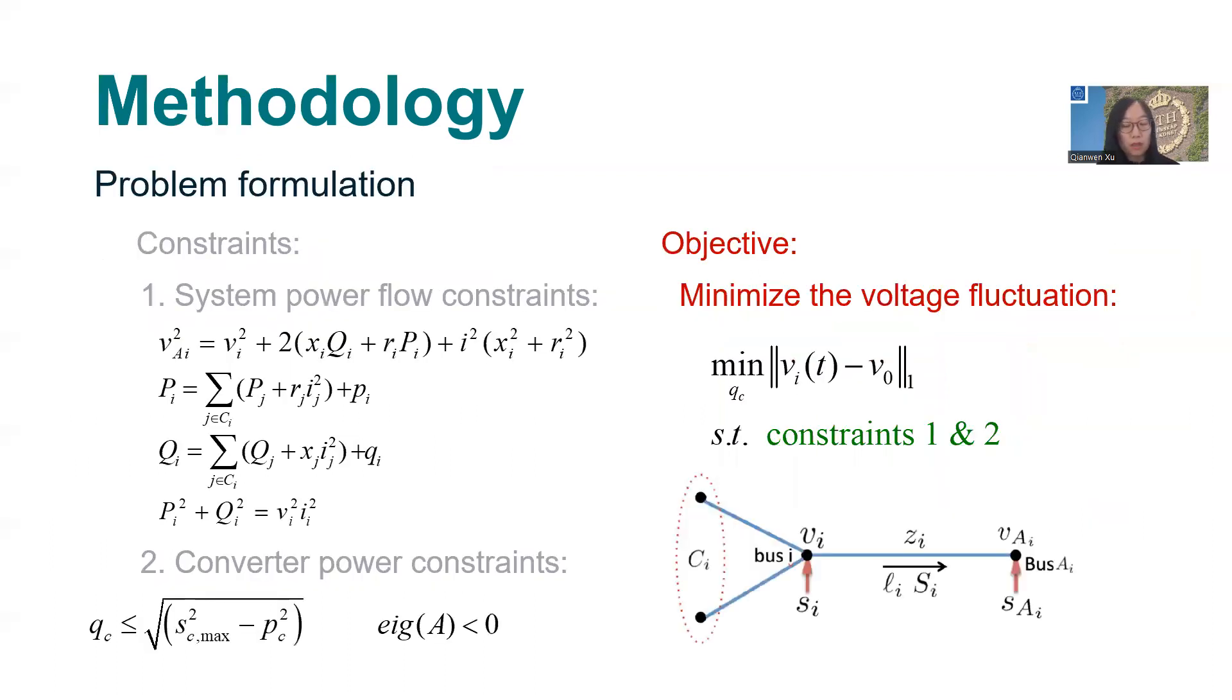For details, first, the voltage control problem is formulated as a centralized optimization problem which consists of the physical constraints and the objective. Here we have two constraints. First is the power flow constraint, which is represented by the power flow model. And also we have the converter power constraint to limit the maximum capacity of the output power of converter, and the small signal stability constraint. The objective is to minimize the voltage deviation of all buses by scheduling the reactive power setpoint of all converters.